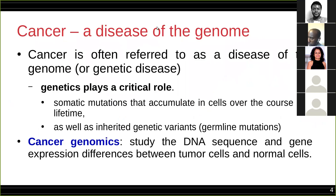Everybody knows that cancer is a disease of the genome — there are genetic aberrations, sometimes we call it a genetic disease. There are also external factors like radiation and environmental factors that could play a role, but genetics plays a very critical role in the initiation and progression of cancer in general. There are two types of mutations we have in cancer: somatic mutations that we accumulate in cells over the course of a lifetime, and germline mutations — things that we inherit as genetic variants from birth.